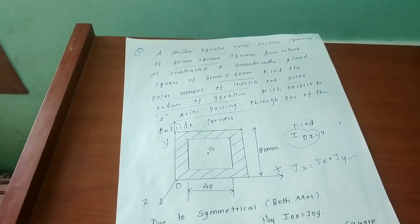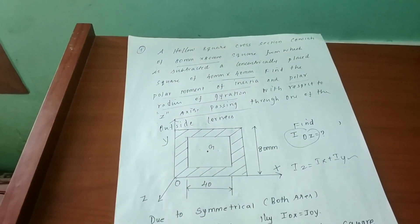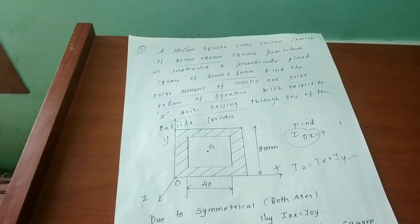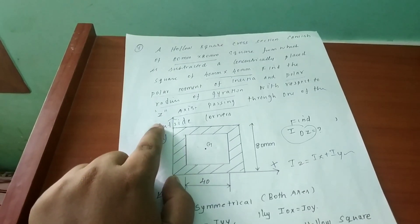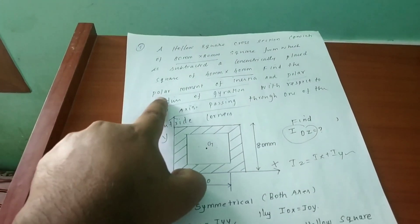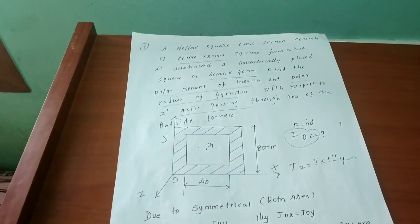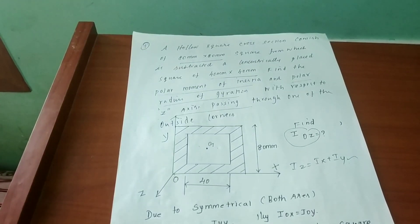Find the polar moment of inertia and polar radius of gyration with respect to the edge axis. What is the difference from the previous problem? In the previous case, we had to use the central axis to find the moment of inertia, but here we have to use the edge axis. The second thing they are asking is the polar moment of inertia.